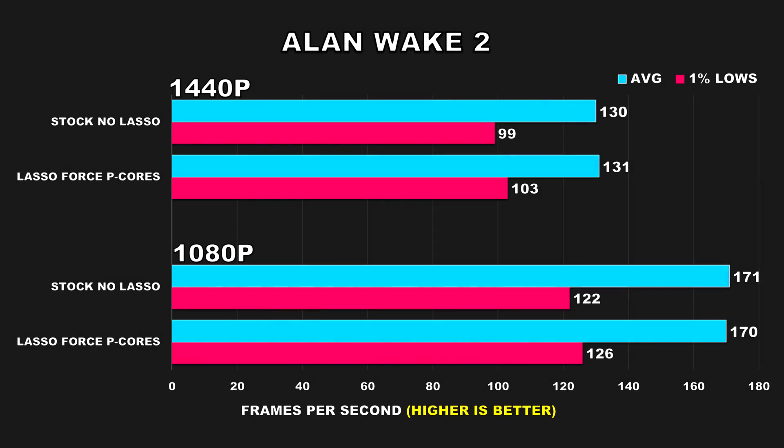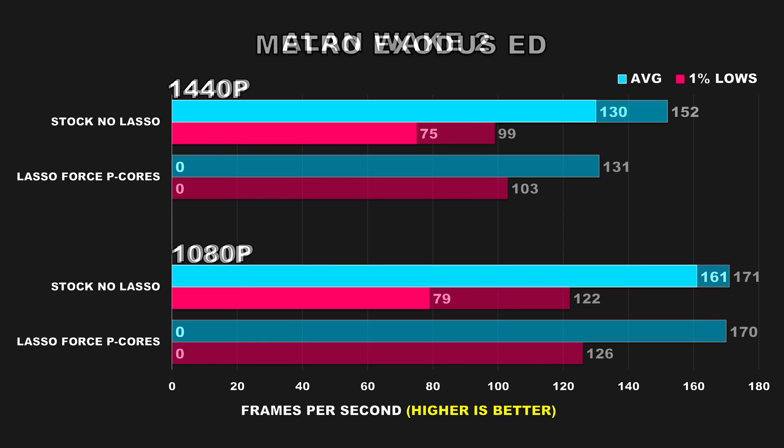Let's kick things off with our first game, Alan Wake 2. Interestingly, the performance remained consistent whether or not Process Lasso was running, at both 1080p and 1440p. Given that this game is primarily GPU-bound and not as heavily threaded as some of the others, it's not surprising that manipulating its core affinity didn't impact performance.